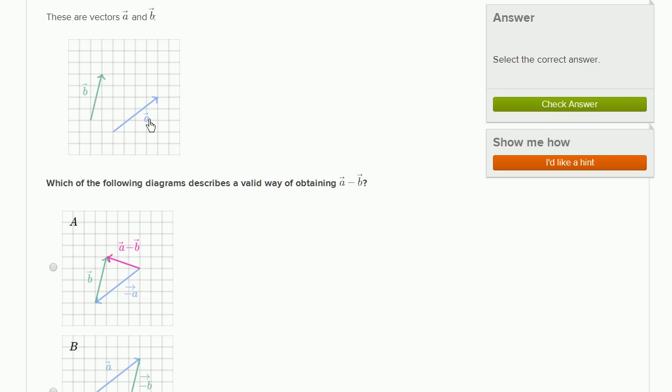These are vectors a and b. That's vector a, that's vector b. Which of the following describes a valid way of obtaining vector a minus vector b?